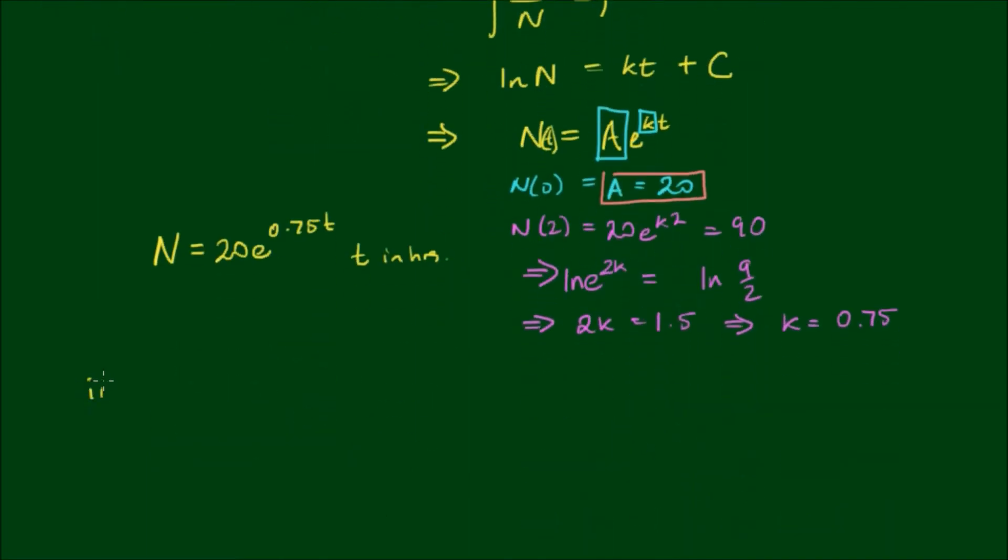Part 2 of the question is how long till the quantity of bacteria reaches 1000. We can set this up as 1000 equals 20 times e to the 0.75t. Rearranging, e to the 0.75t equals 1000 over 20, which equals 100 over 2, which equals 50.